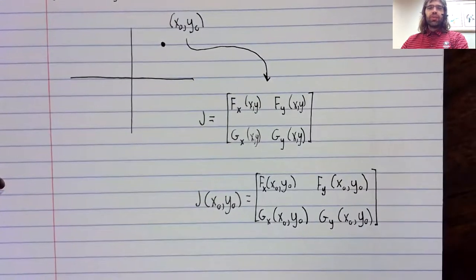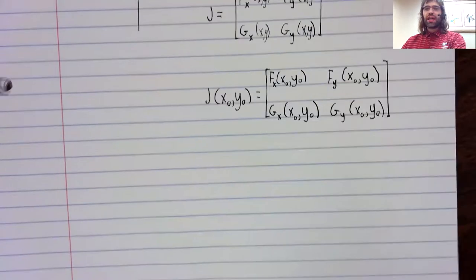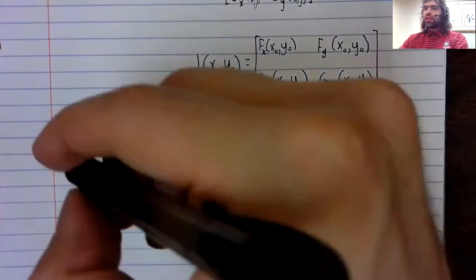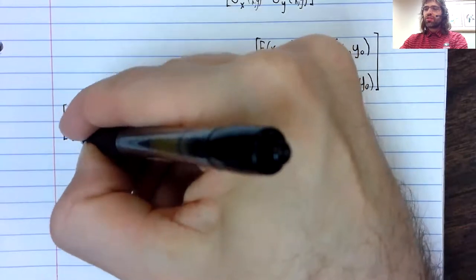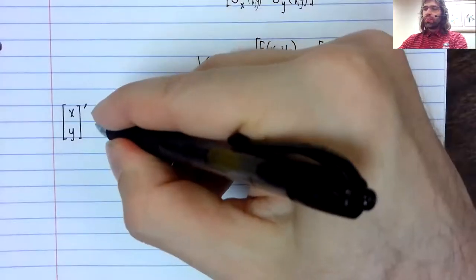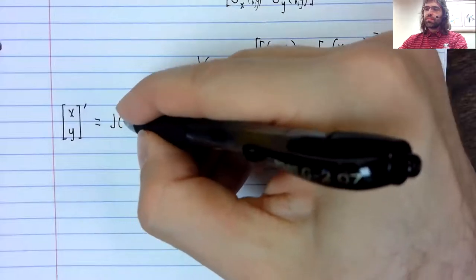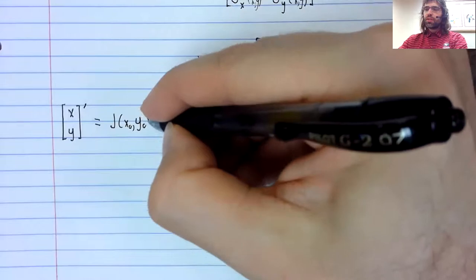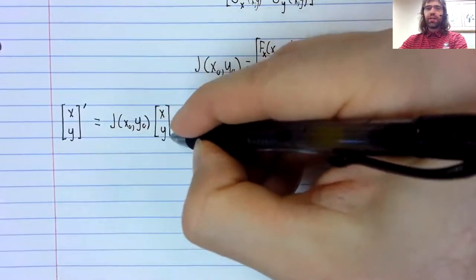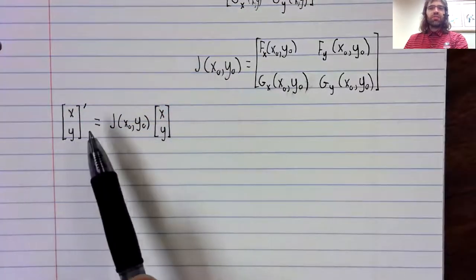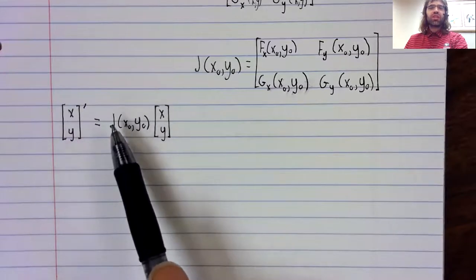Sticking x zero and y zero into the Jacobian now gives us a constant matrix. And what we're going to do is we're going to look at a linear differential equation. X, y prime equals this matrix times the vector x, y.